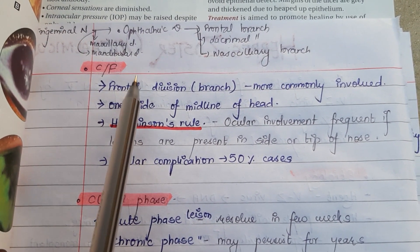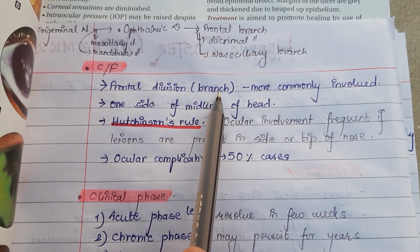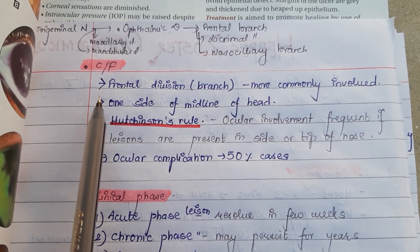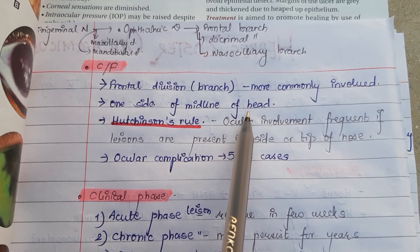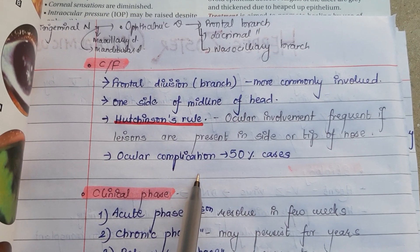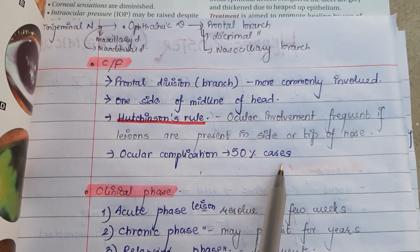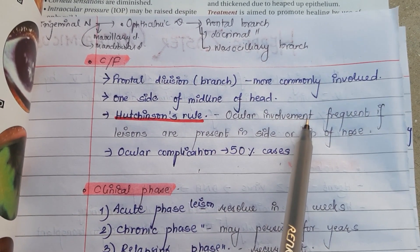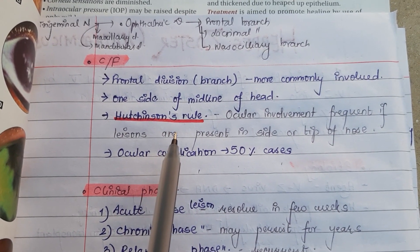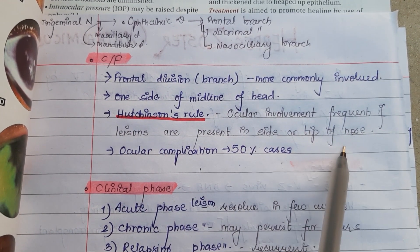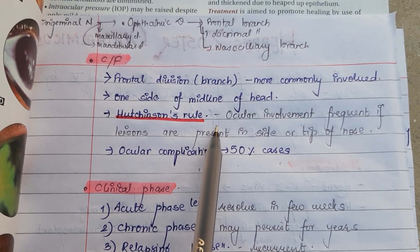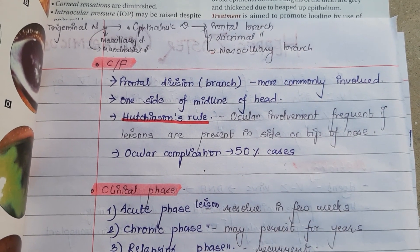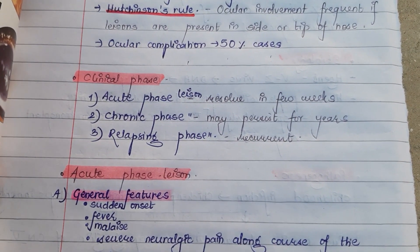The frontal branch of the ophthalmic division of the trigeminal nerve is most commonly involved. The lesions are strictly limited to only one side of the midline of the head. Ocular complications occur in around 50% of cases. Hutchinson's rule states that ocular involvement is more frequently seen in individuals whose lesions are present on either the side or tip of the nose — whenever there are vesicular eruptions there, ocular involvement is frequent.